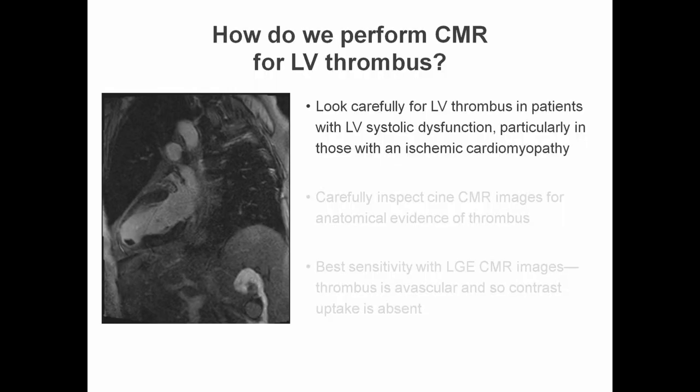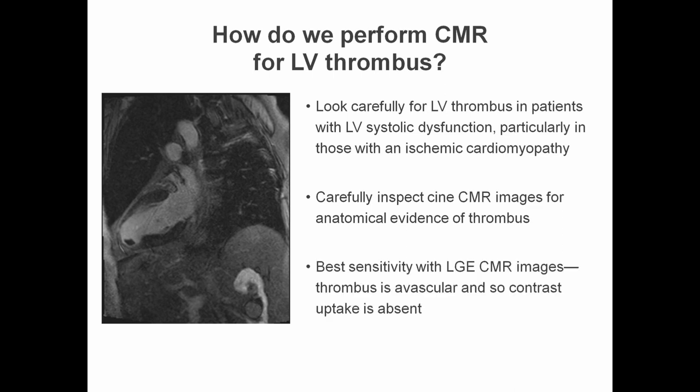In summary, how do we perform CMR for left ventricular thrombus? We should always look carefully for left ventricular thrombus in patients with left ventricular systolic dysfunction, particularly those with an ischemic cardiomyopathy, because these are the patients that run the highest risk of thrombus formation. We need to carefully inspect cine-CMR images for anatomical evidence of thrombus in multiple different views, but the best sensitivity is with late gadolinium enhancement CMR images.